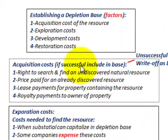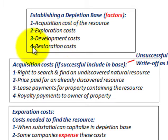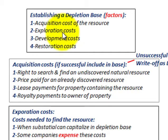This is just an overview of establishing a depletion base and the factors that would be included for natural resources: our acquisition cost, exploration cost, development costs, and restoration cost. That takes care of the depletion of natural resources and our general guidelines for determining our depletion base.